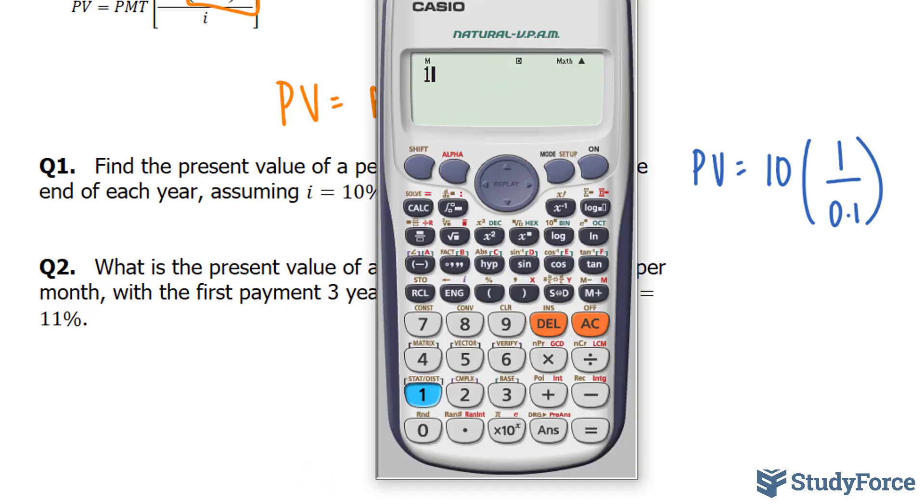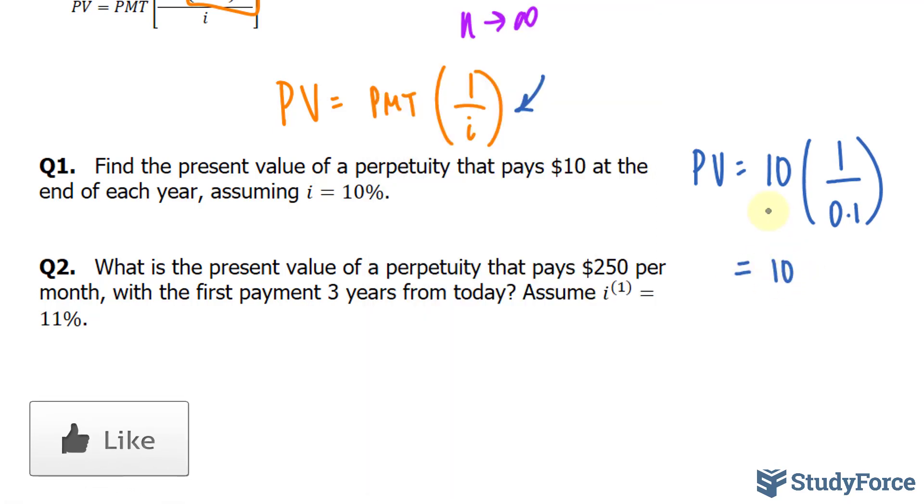And if we multiply that out, 10 times 1 over 0.1, we end up with $100. So, that's the present value if we are to get $10 in perpetuity at the end of each year.